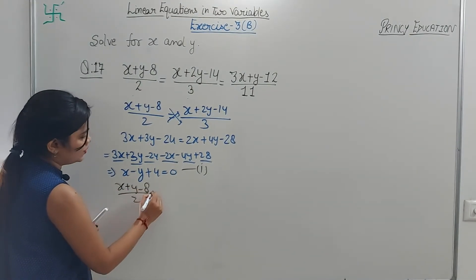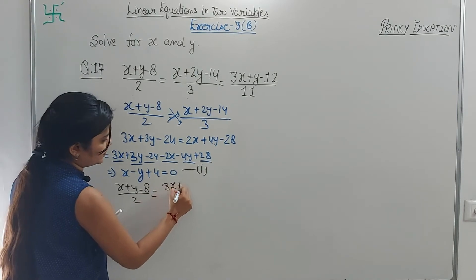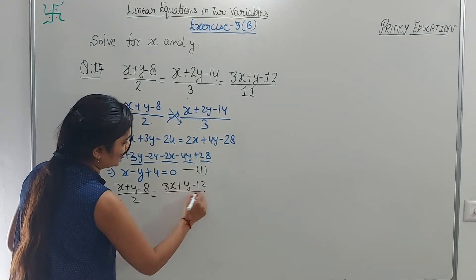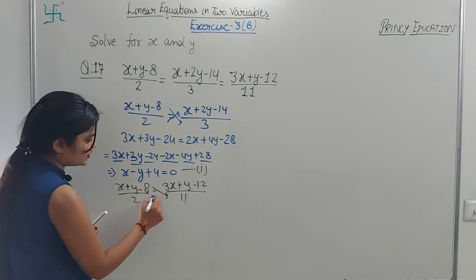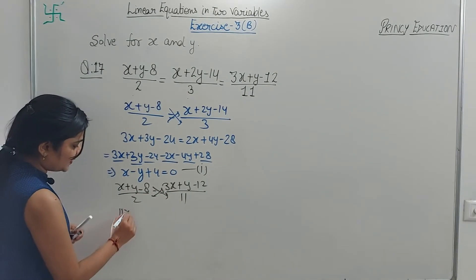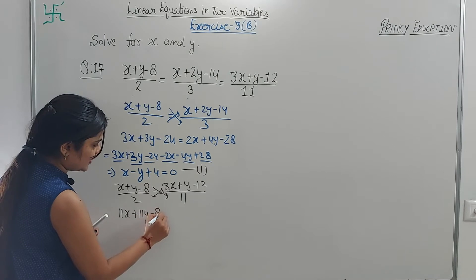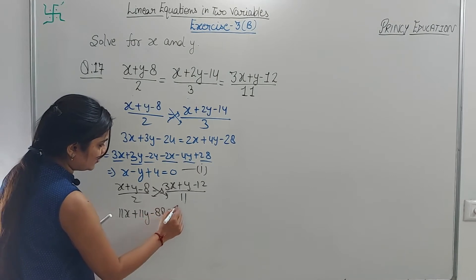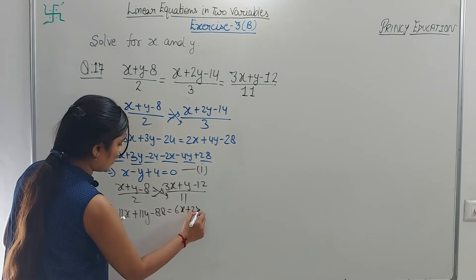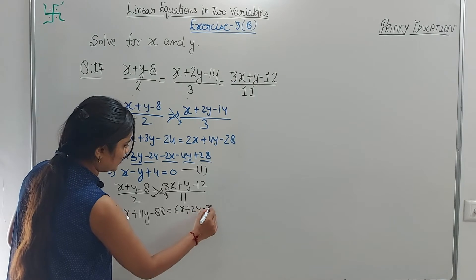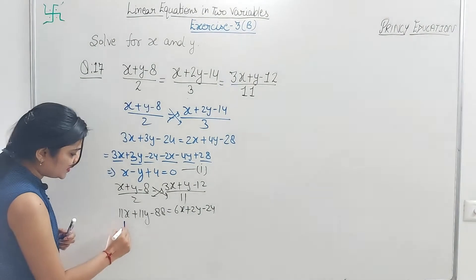Here minus y comes. Now for the second pair, setting (x + y - 12)/11 equal. Cross multiply: 11x + 11y - 88 = 6x + 2y - 24. Bringing terms to the left side.